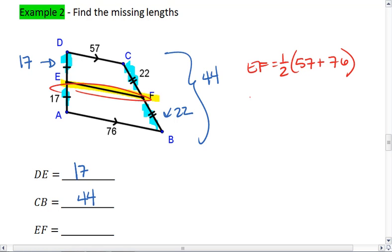We add 57 plus 76, and we're going to get 133. So EF is, there we go, 1/2 of 133. Divide 133 by 2, we get that EF is 66.5.